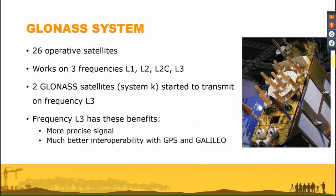The GLONASS system has been operating since 1983 and should have been the first constellation for worldwide civil users since 1991, but due to various problems it only became operational in 1995. It is currently composed of 26 satellites and provides multi-frequency signals: L1, L2, L2C, and L3. However, most satellites work only with L1 and L2 frequencies.